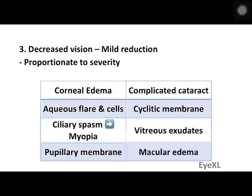There are many causes of diminution of vision in uveitis, starting anteriorly and going posteriorly: corneal edema, aqueous flare and cells, ciliary body spasm causing pseudomyopia, pupillary membrane formation impeding light, complicated cataract, cyclitic membrane (a membrane behind the lens), vitreous exudates, and finally macular edema on the retina. One or more of these causes can reduce vision in a patient of acute anterior uveitis.